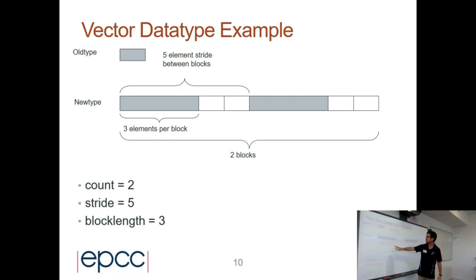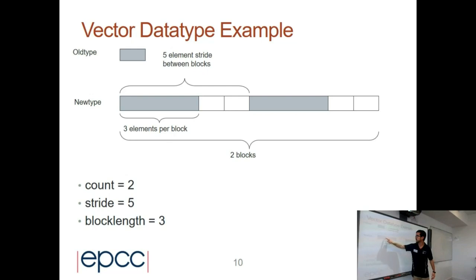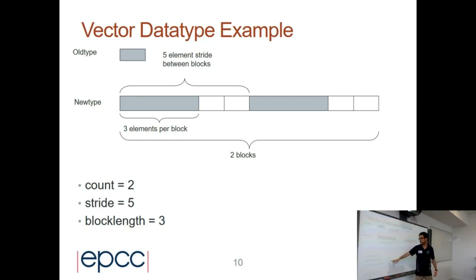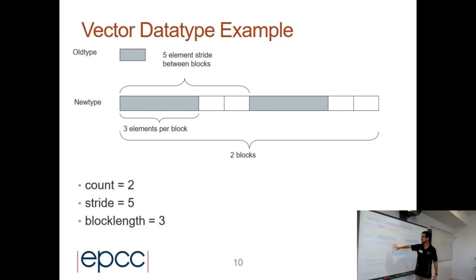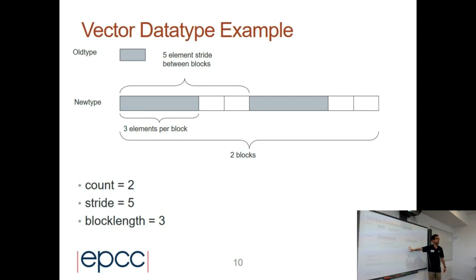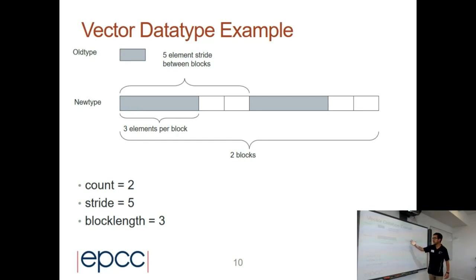The block length is three — meaning I want to send these three elements and then those three elements. The stride is five, because I want a gap of two between the portions, so the elements I want to send plus the gap equals five. These are the parameters for the vector data type.